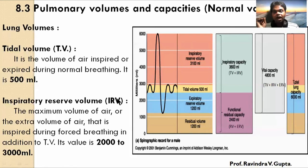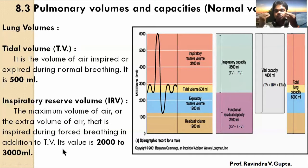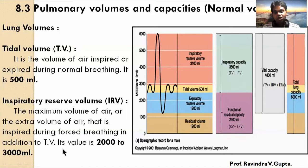IRV is the maximum volume of air, or extra volume of air, that is inspired during forceful breathing in addition to the tidal volume. Normal breathing is happening, but with that we have extra volume — we forcefully take more and more air during inspiration. This is the inspiratory reserve volume.